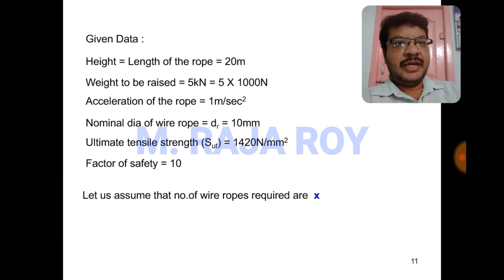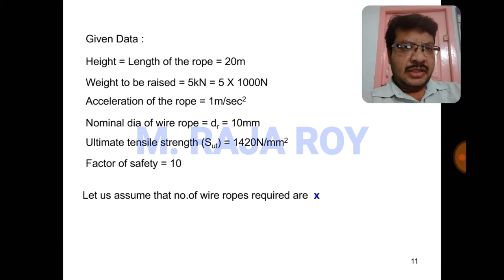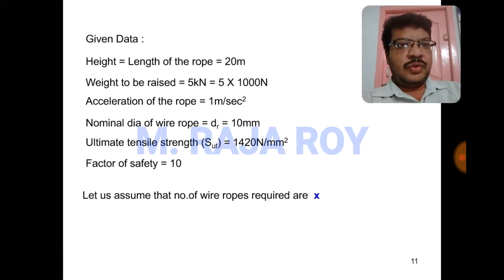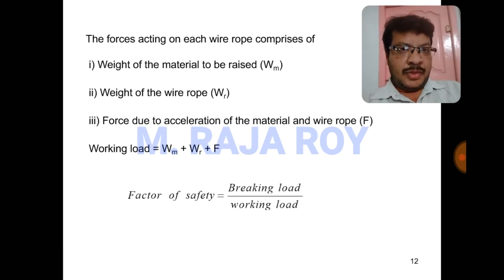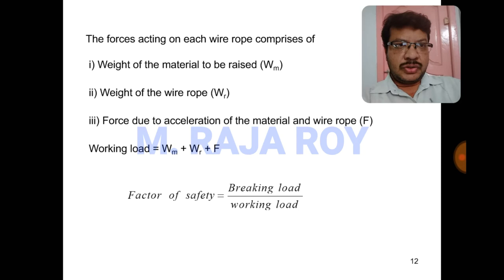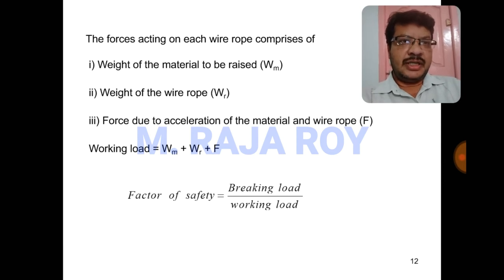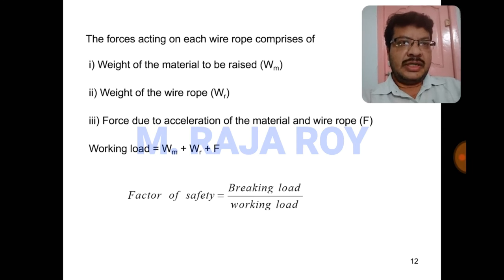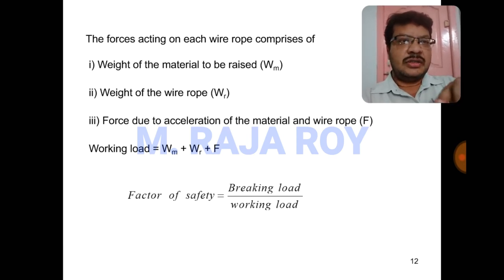The given data: height equals length of the wire = 20 m; weight to be raised = 5 kN = 5000 N; acceleration = 1 m/s²; nominal diameter of wire rope = 10 mm; ultimate tensile strength = 1420 N/mm²; factor of safety = 10. Let the number of wire ropes required be X. The wire rope must withstand three types of loads: the weight to be raised, its own self-weight, and the force due to acceleration. The total working load is the sum of these three.